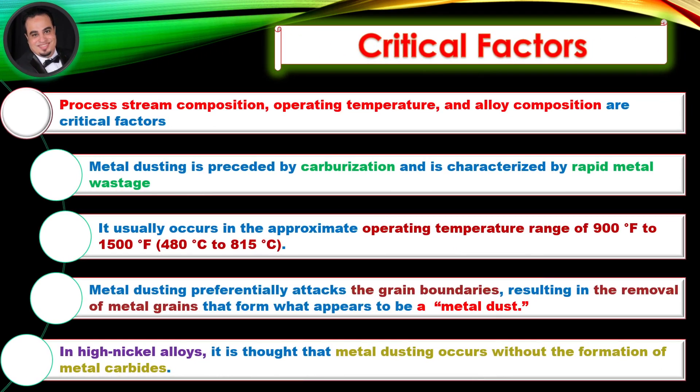Critical factors include process stream composition, operating temperature, and alloy composition. Metal dusting is preceded by carburization and is characterized by rapid metal wastage. It usually occurs in the approximate operating temperature range of 900 degrees Fahrenheit to 1500 degrees Fahrenheit.